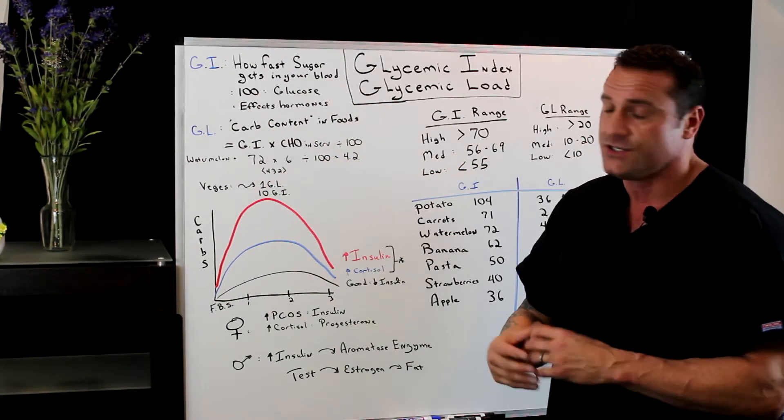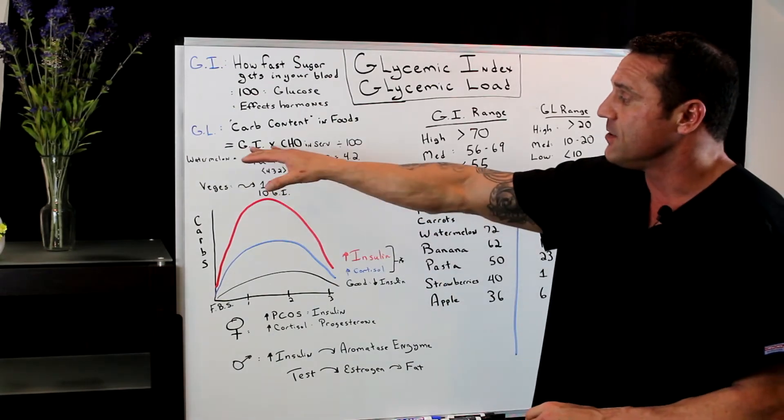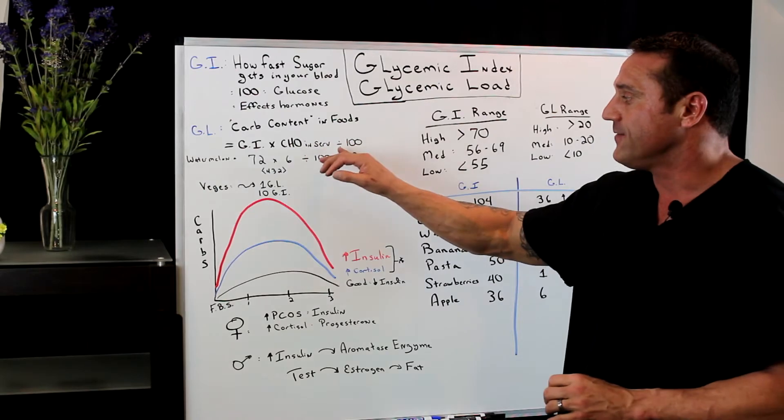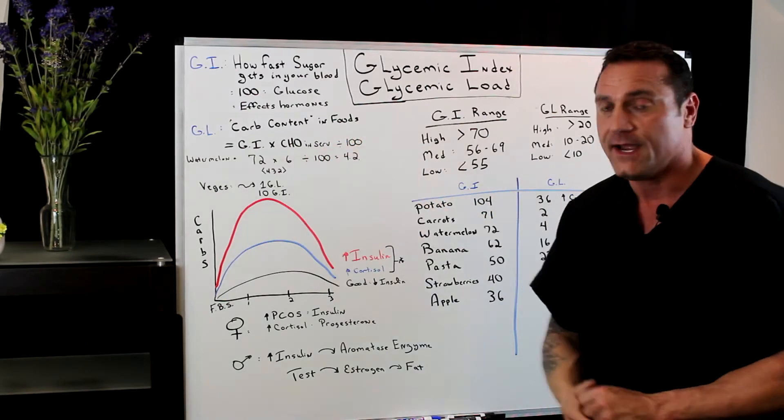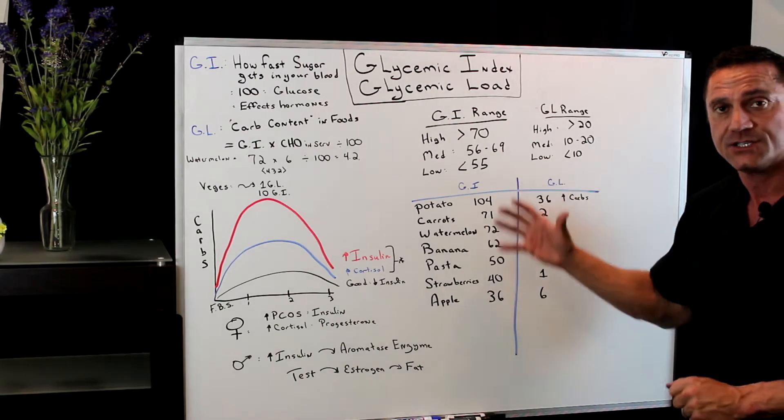The glycemic load is the carb content. What you're going to do the equation is that you're going to take the glycemic index, multiply the amount of carbs per serving and divide it by 100. Let me show you on the glycemic load and glycemic index chart.